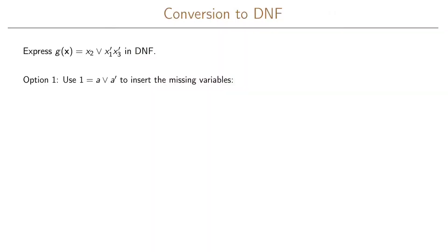It can often be useful to take a function and write it in one of its normal forms. In this example we're going to look at the function g and write it in the disjunctive normal form. One option is to use the fact that 1 equals a OR NOT a, and then we can insert the missing variables.